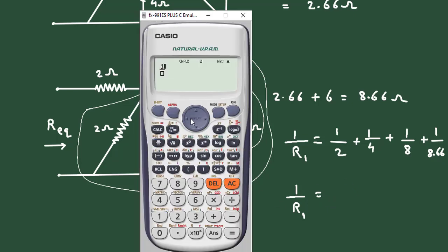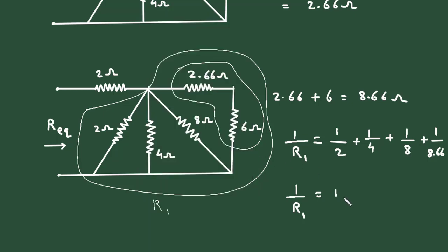So 1 upon R1, let's solve this in calculator. It will be 1 upon 2 plus 1 upon 4 plus 1 upon 8 plus 1 upon 8.66, so it is equal to 0.99, which is approximately equal to 1 ohm.